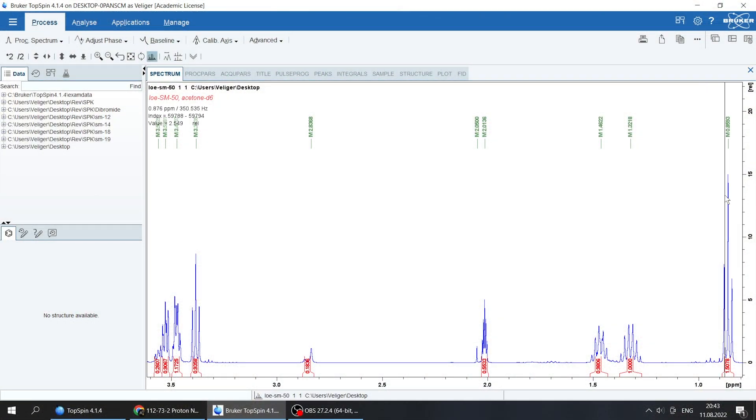Let's go to the TopSpin program. Here you can see a triplet of the CH3 fragment, system of two methylene groups nearby oxygen of butyl, CH2 fragment, and of course system for the glycol parts.